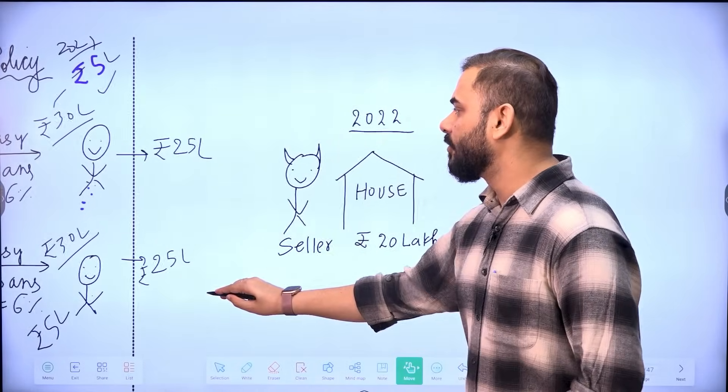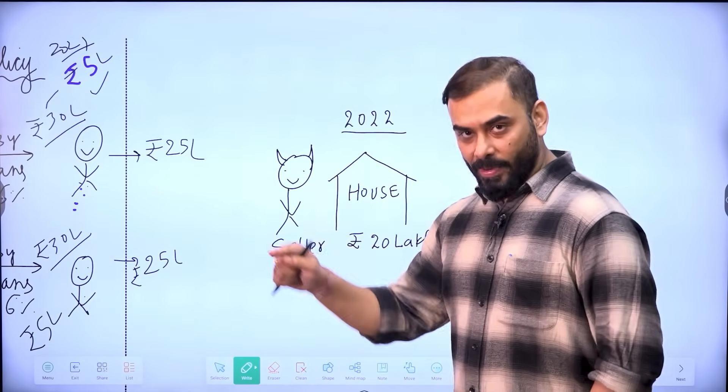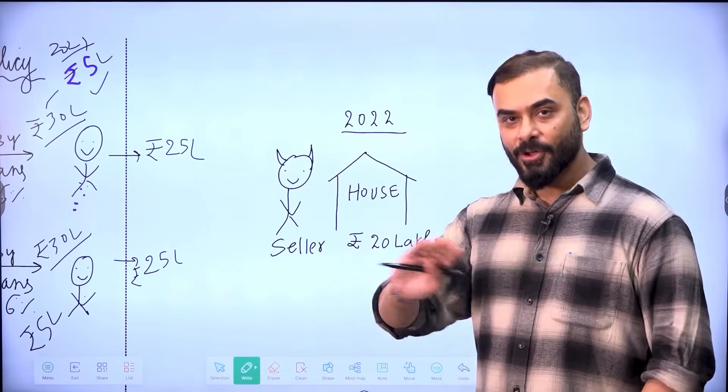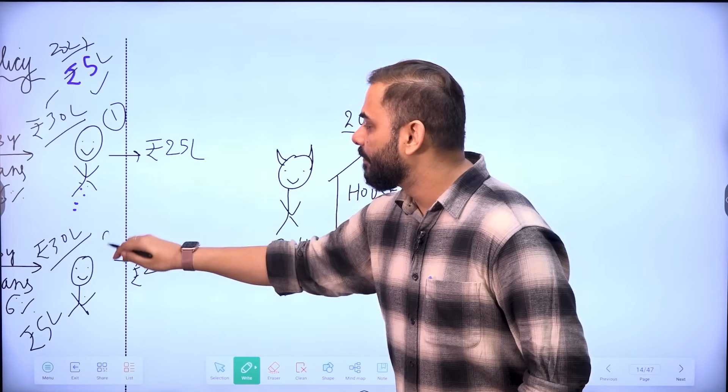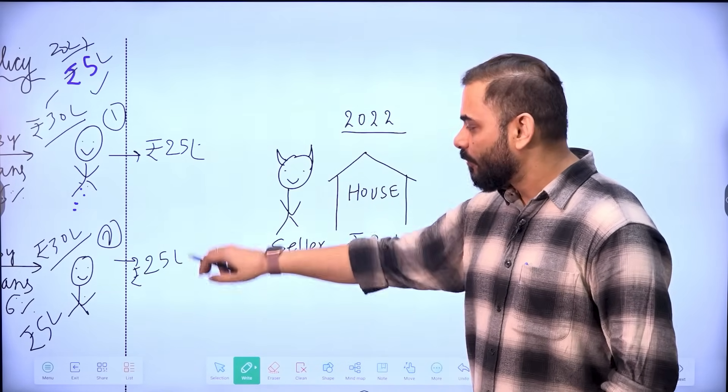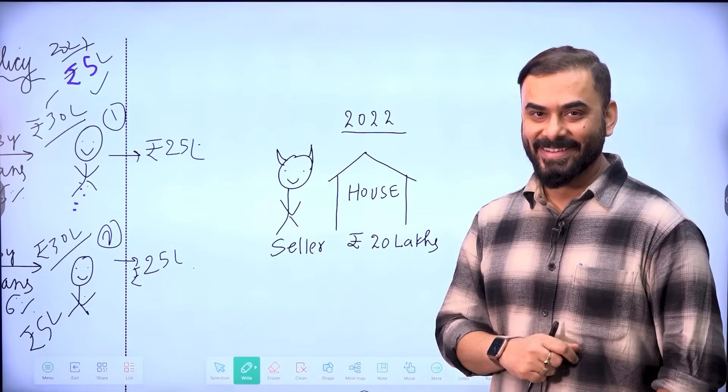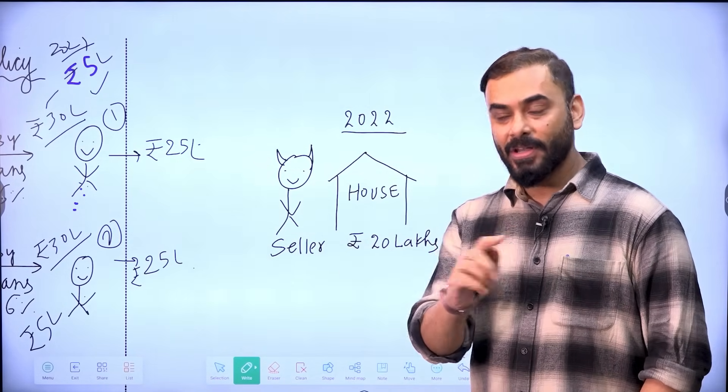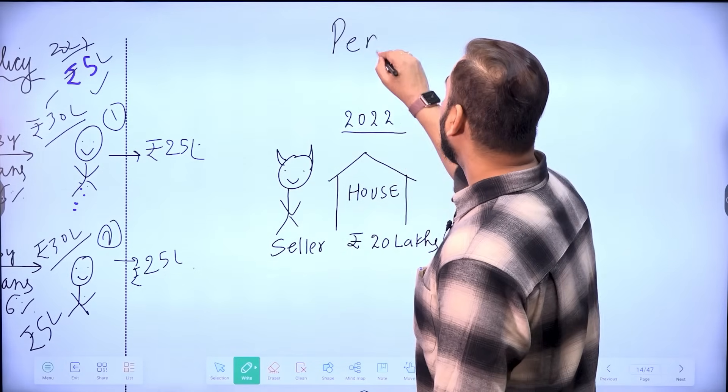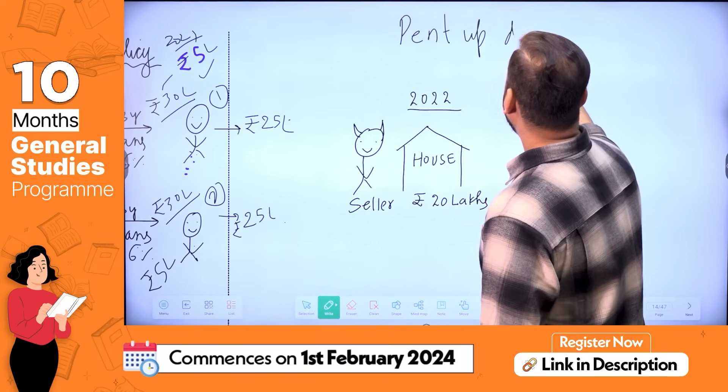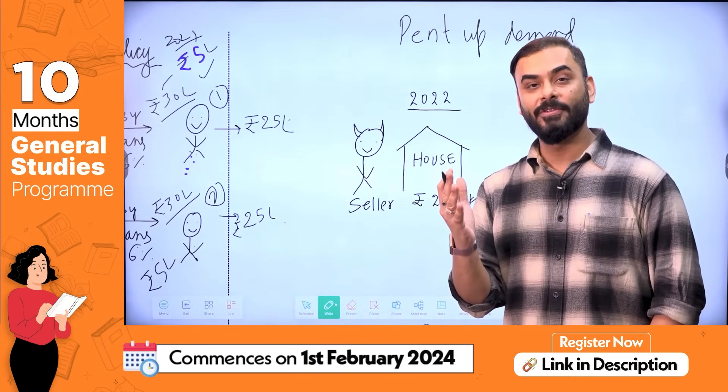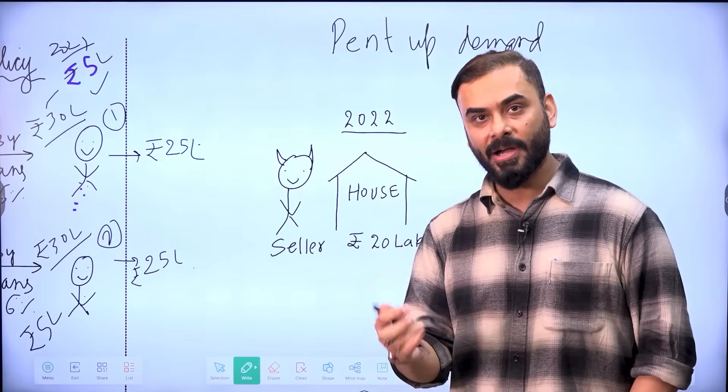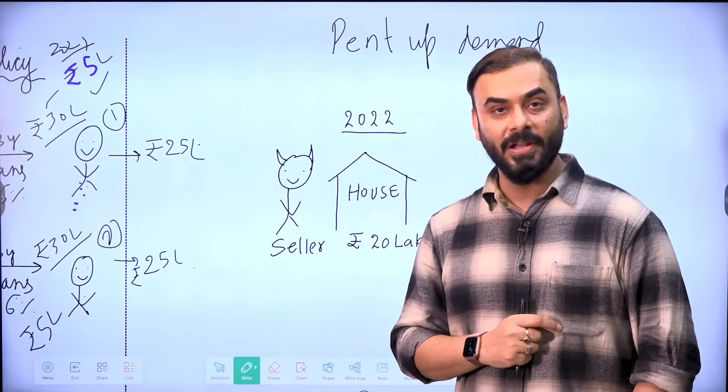So let us see what happened in the year 2022. In the year 2022, the moment the COVID restrictions are over and economy is coming back to normal. This is person number one, person number two. Both have 25 lakh rupees in their hand. Immediately after COVID, there was something called pent up demand. What is pent up demand? Pent up demand means demand which people suppress during COVID. But all of a sudden after COVID restriction is over, people came in the market and they said, we want to fulfill our demand.